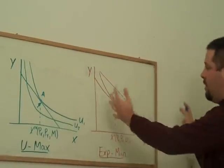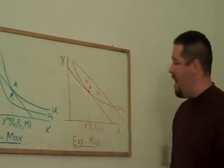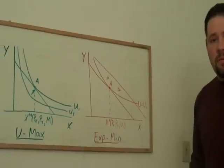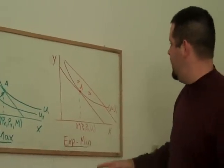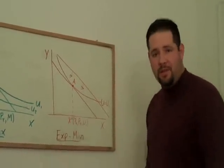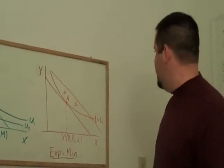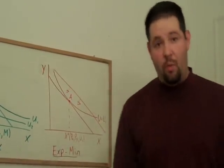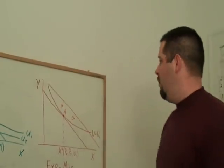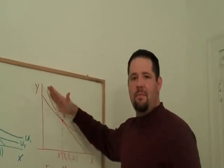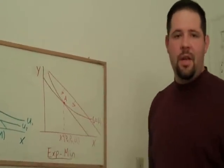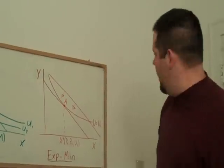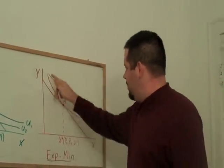Now over here we have a similar looking graph, but it comes from a very different problem. This is a graph of the expenditure minimization problem. So given a level of utility that this consumer wants to attain, what this consumer does is he minimizes the expenditure. He picks bundles X and Y to minimize the expenditure to obtain this utility.